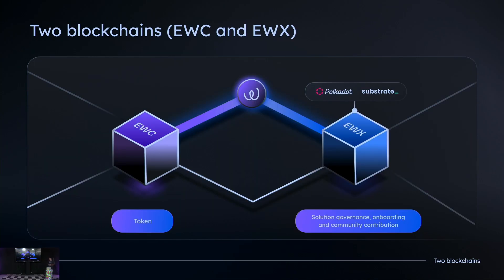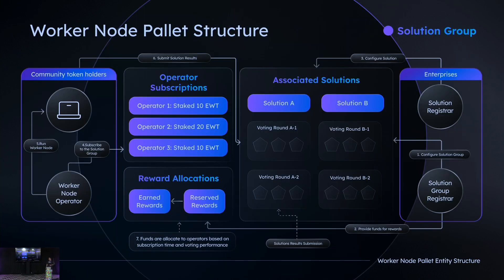Energy Web has an existing EVM-based chain called EWC, which is mainly used for tokenization. However, what truly brings value to us is the creation of EWX, because it provides real-world tangible utility of our tokens. On EWX, we developed the worker node pallets from the perspective of two domains: the community token holders, which we also call worker node operators, and on the other side, the perspective of the enterprises.